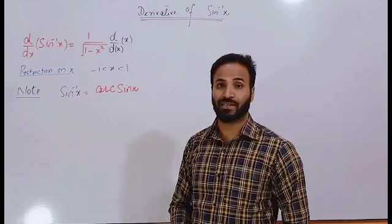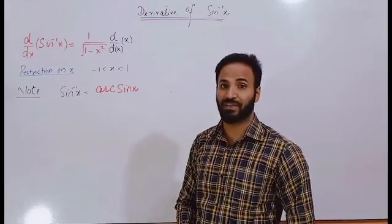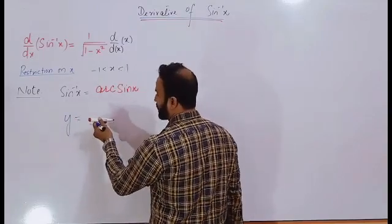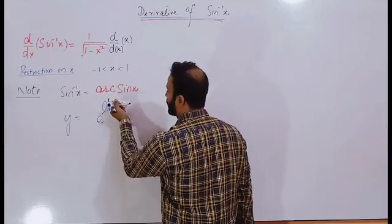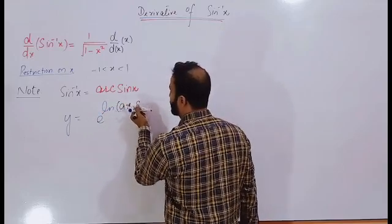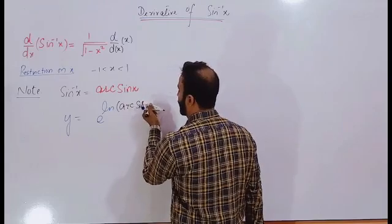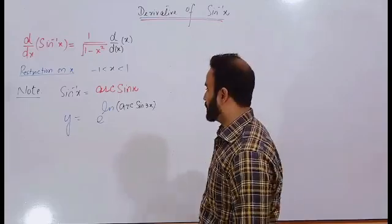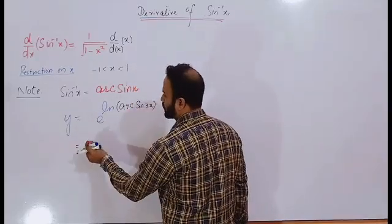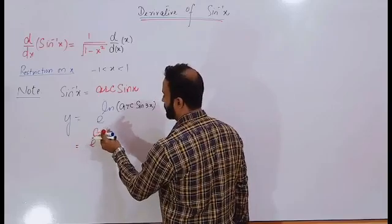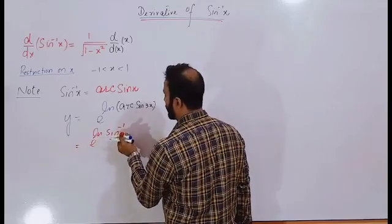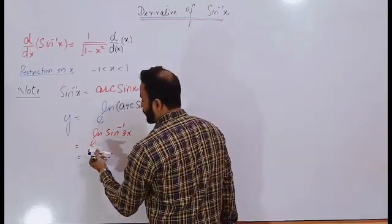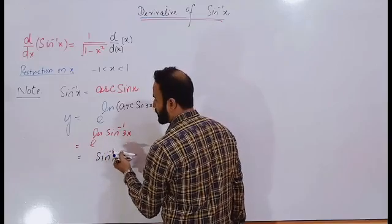The first question which I'm going to explain has appeared in different exams. y is equal to e to the log of arc sine 3x. This is equal to e to the log of sine inverse 3x, which simplifies to sine inverse 3x.